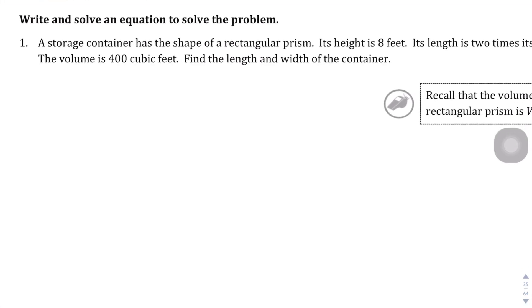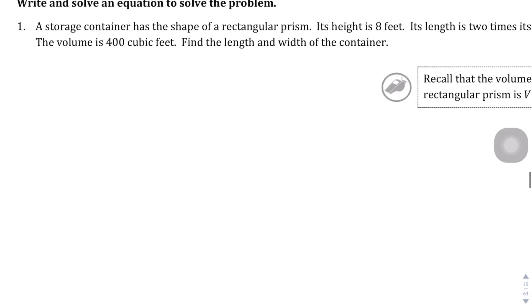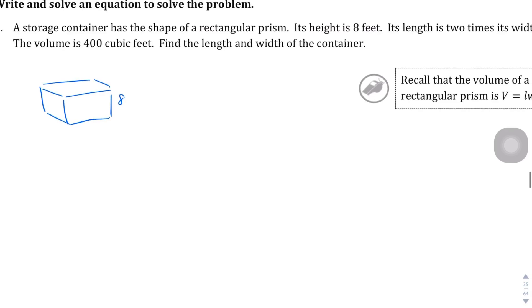A storage container has a shape of a rectangular prism. Its height is 8 feet, its length is 2 times its width, the volume is 400 cubic feet. Find the length and width of the container. So just to visualize what's going on here, here is the storage container that they're talking about. Its height is 8 feet, and its length is 2 times its width. The volume is 400 cubic feet. I don't know if you remember your volume formula, but basically we're going to multiply the length and the width and the height.